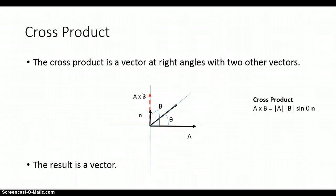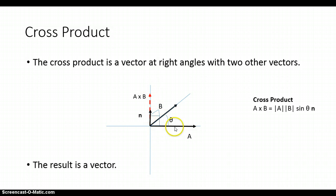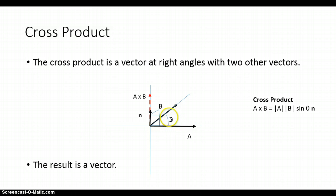What about the cross product? The cross product is a vector at right angles with two other vectors. If we have vector a and vector b, the cross product of those two vectors is 90 degrees from each of the two vectors. So the cross product is 90 degrees from a and also 90 degrees from b, as shown by the box symbol. And a and b have an angle theta between them. This is in a three-dimensional space.